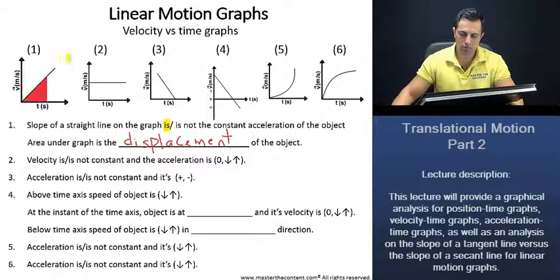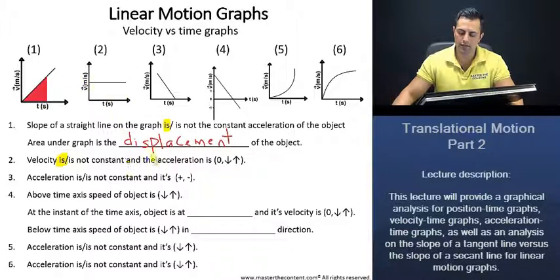For graph two — this scenario here — velocity is constant, because the line is just straight, and the acceleration is zero. The acceleration is zero when your velocity is constant.